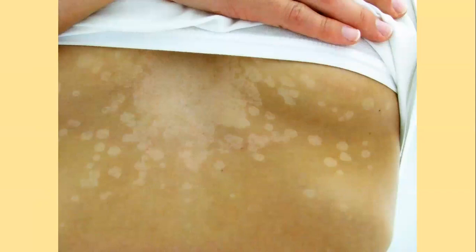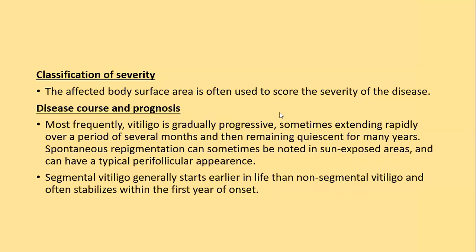A common diagnostic error involves pityriasis versicolor — there will be slight scaling, and on Wood's lamp examination vitiligo is milky white, while pityriasis versicolor shows yellow-orange fluorescence. In older patients, hypopigmented rather than depigmented lesions on trunk and limbs may be due to hypopigmented mycosis fungoides. The affected body surface area is often used to score the severity of vitiligo.